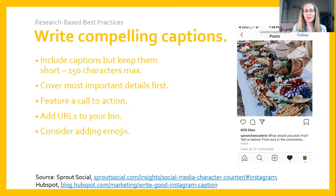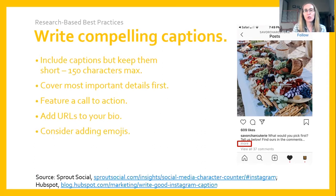Not only do you need to keep Instagram captions succinct, but it's also really important to cover the most important details first. In a particular Instagram feed, Instagram will limit the amount of a caption that a user sees to two, three, or four lines. For any caption content that extends past that limit, the user has to click 'more' to see that content. If a user doesn't click more, they won't absorb the information shared in that caption, so sharing information upfront is really important.